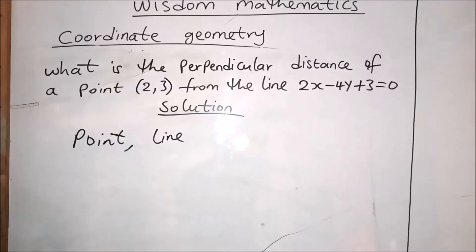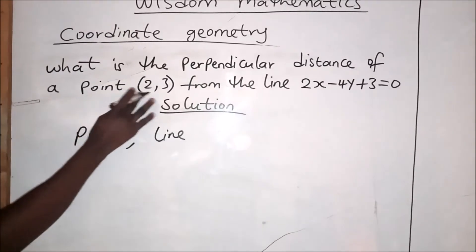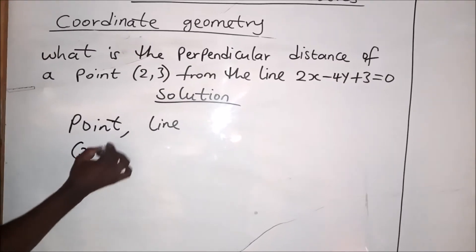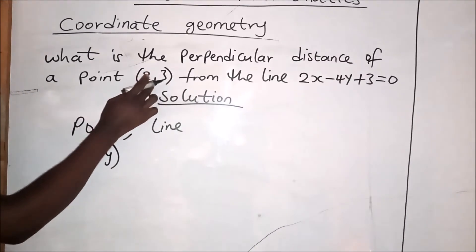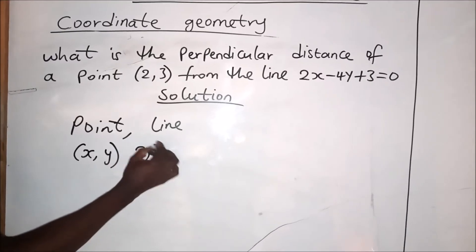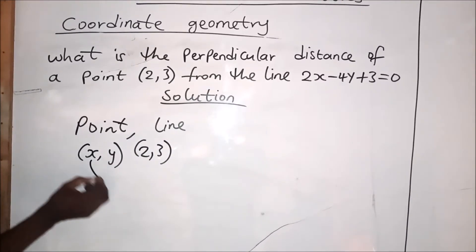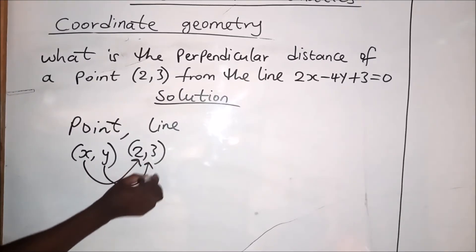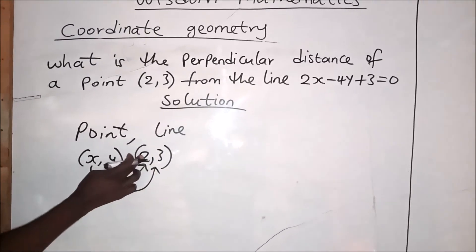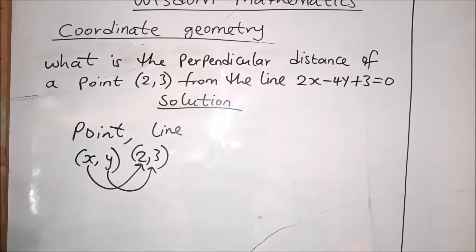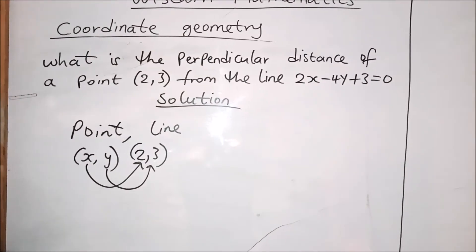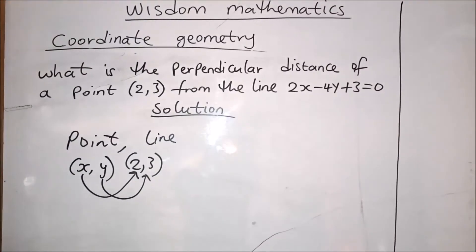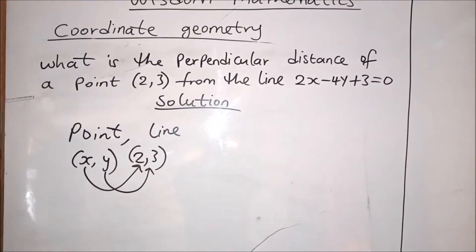This particular point, which is 2 comma 3, is expressed as x comma y. This means the value of x is 2 and the value of y is 3, so x equals 2 and y equals 3. That is for the point. Now the line is 2x minus 4y plus 3 equals 0.